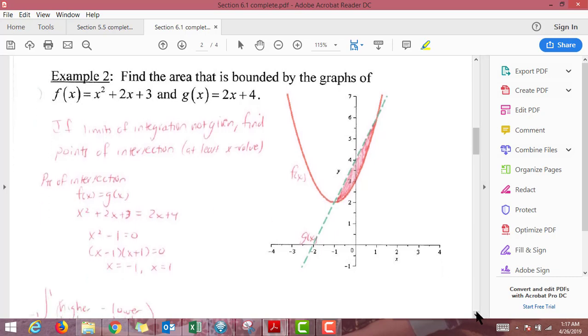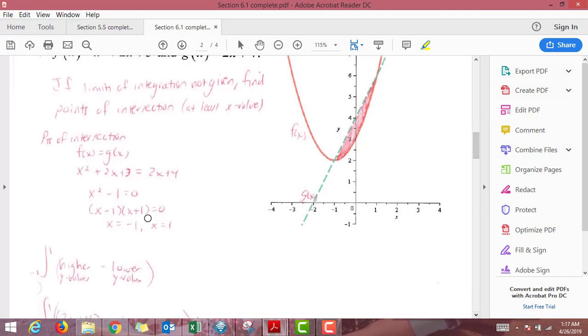So my strategy is to get zero on one side. And when I do, I have x squared minus 1, which is a difference of squares factoring problem. And so I get that x equals negative 1 and x equals 1 are the x values of the points of intersection of these two graphs.